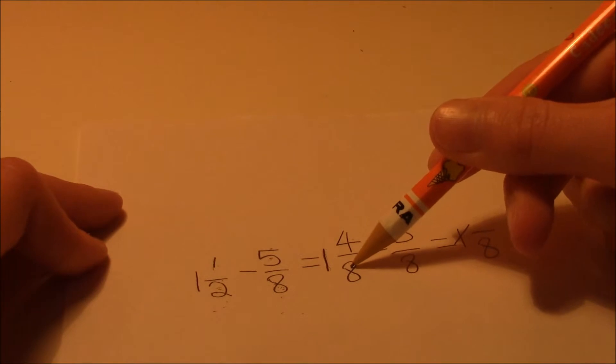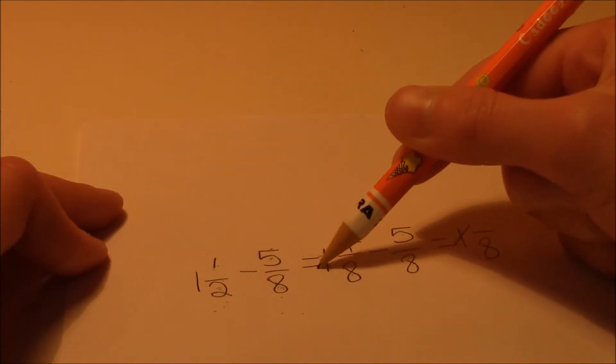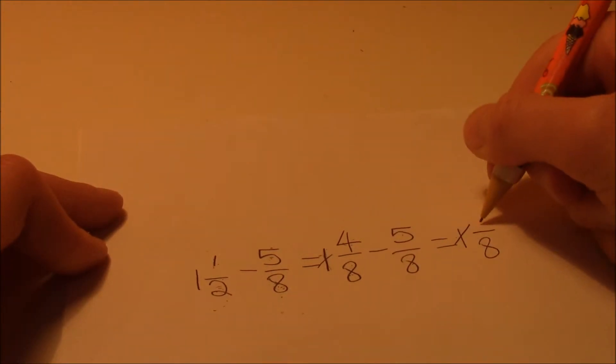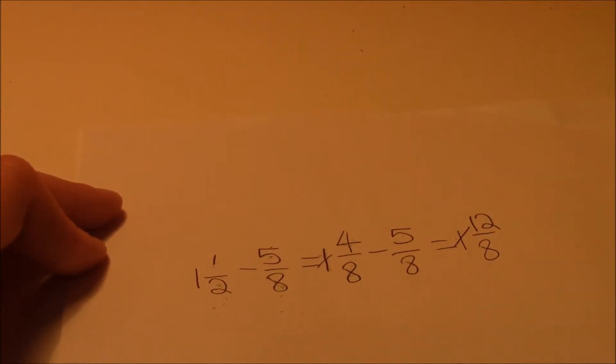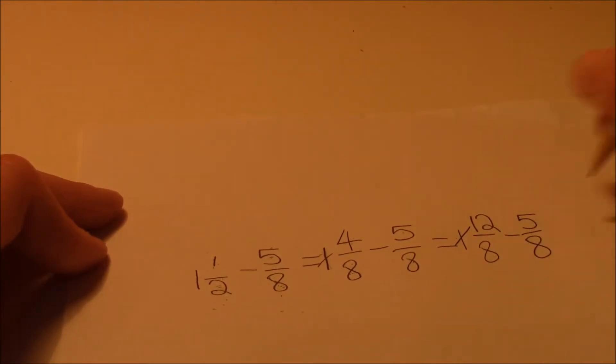8 times 1 plus 4, because you see how this is 8, this is 1, this is 4. You get rid of this, and you add 8 to 4. So that would be 12 over 8 minus 5 over 8, which would be 7 over 8.